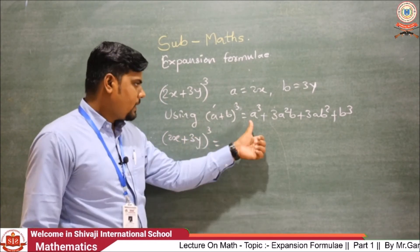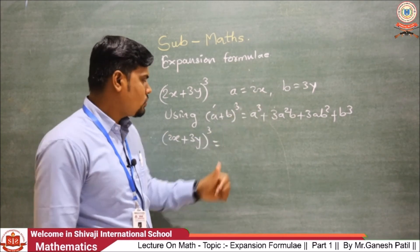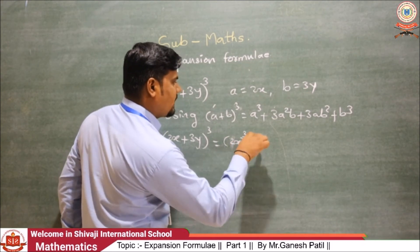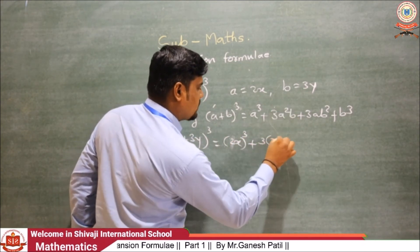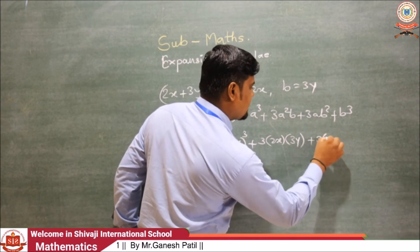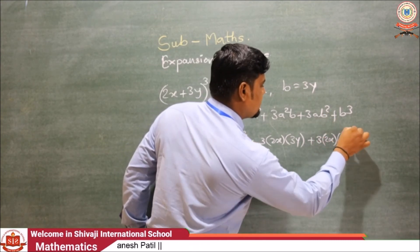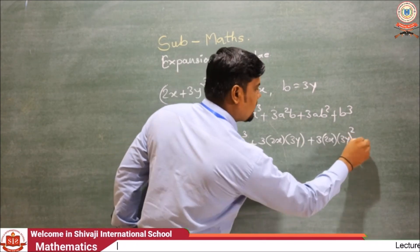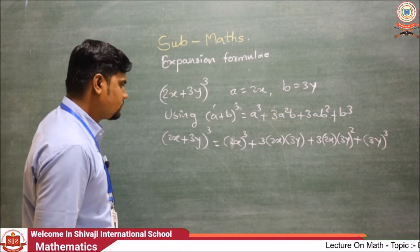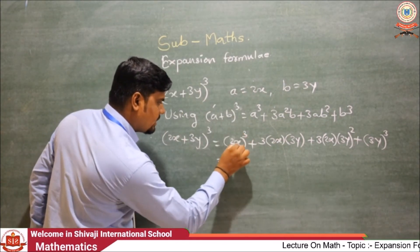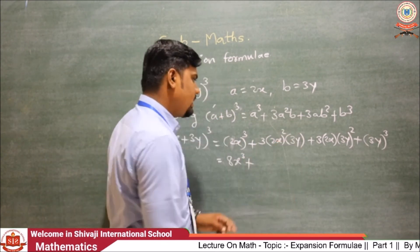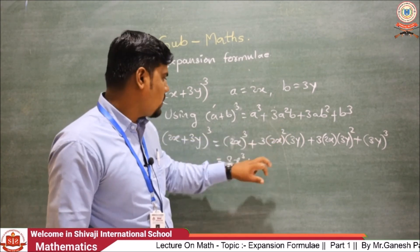So (2x + 3y)³ equals: the first term cubed — (2x)³ — plus 3 times (2x)² times (3y), plus 3 times (2x) times (3y)², plus (3y)³. Now we calculate each term: 2³ = 8, so the first term is 8x³.